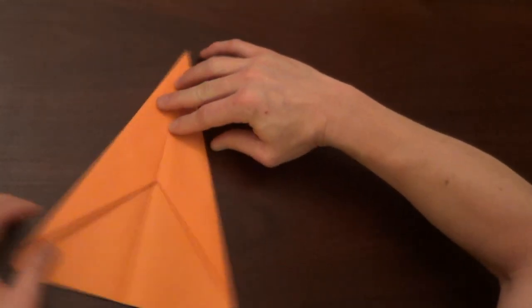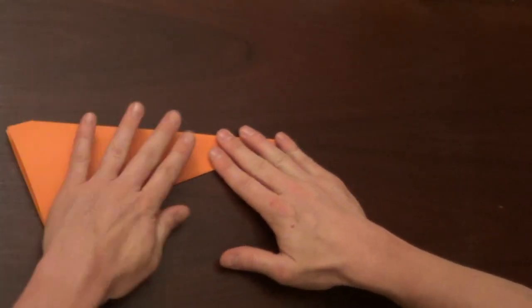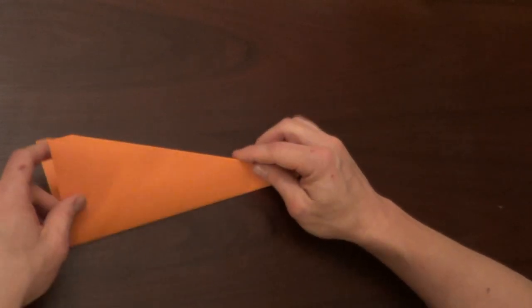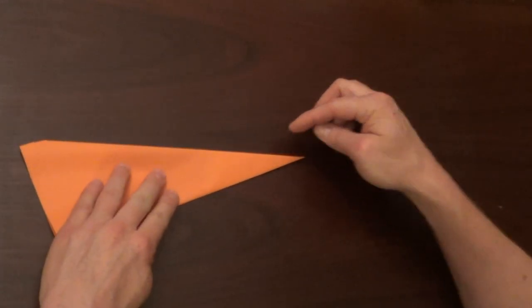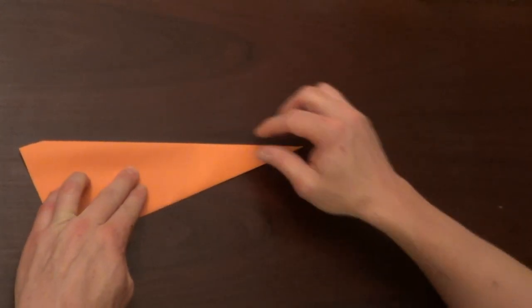Now what we're going to do is fold it in half like so, inside, so all the folds are on the inside. Now we're going to take this edge and fold it right along this bottom line.